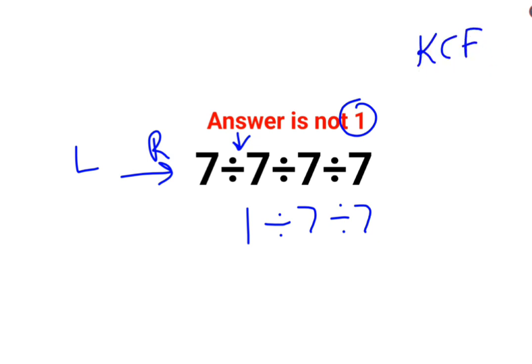have division, you need to follow the rule of KCF, where K stands for keeping the first number as it is, C stands for changing the division sign to multiplication, F stands for flipping or taking the reciprocal of seven, which